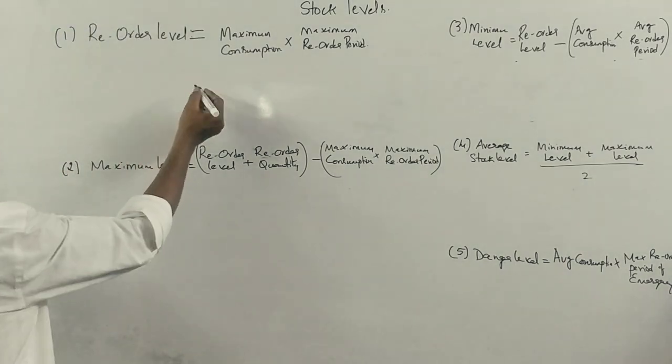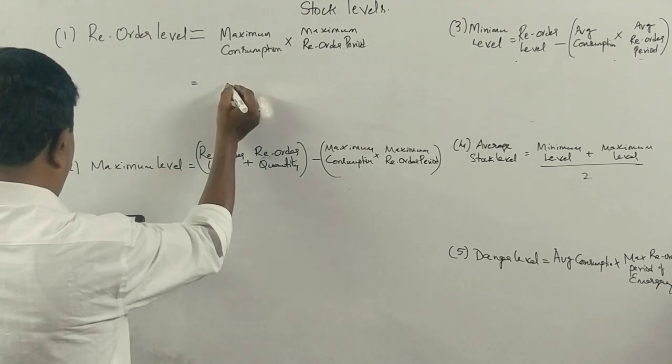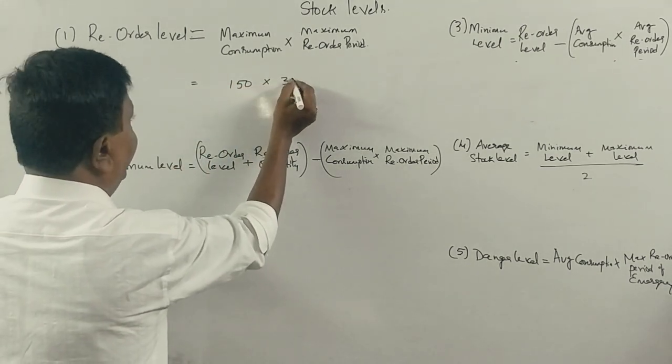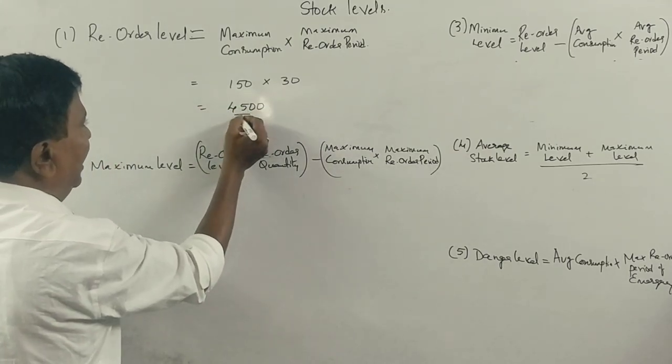Reorder level: maximum consumption, it is 150 units, maximum reorder period, 30 days today. 4,500, correct.